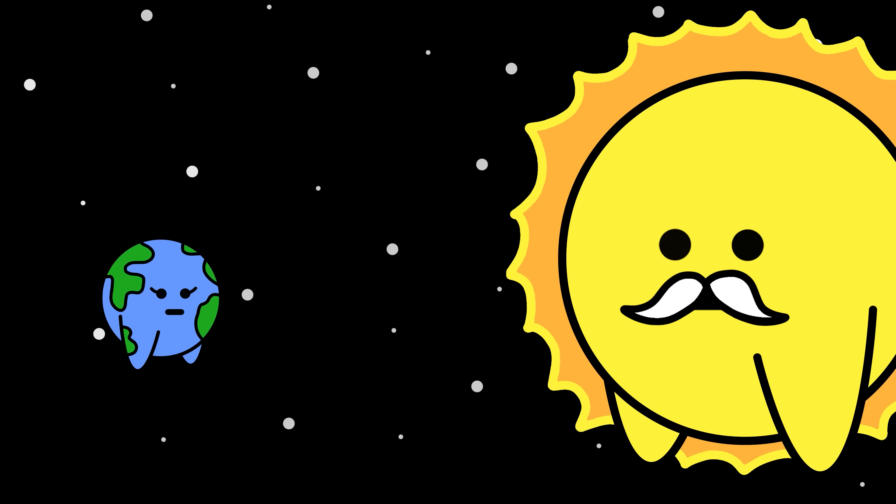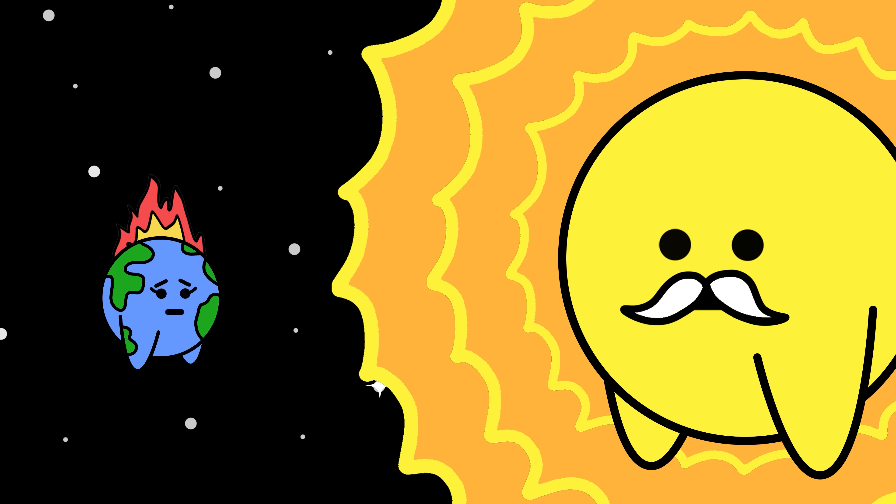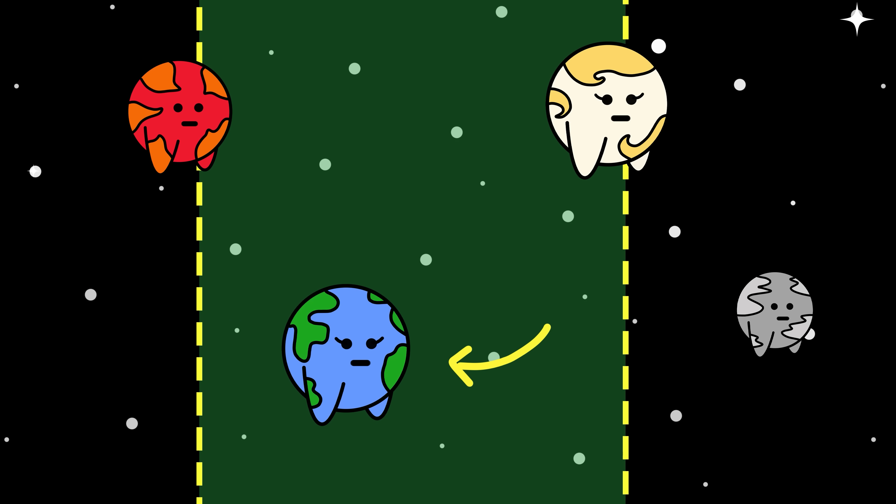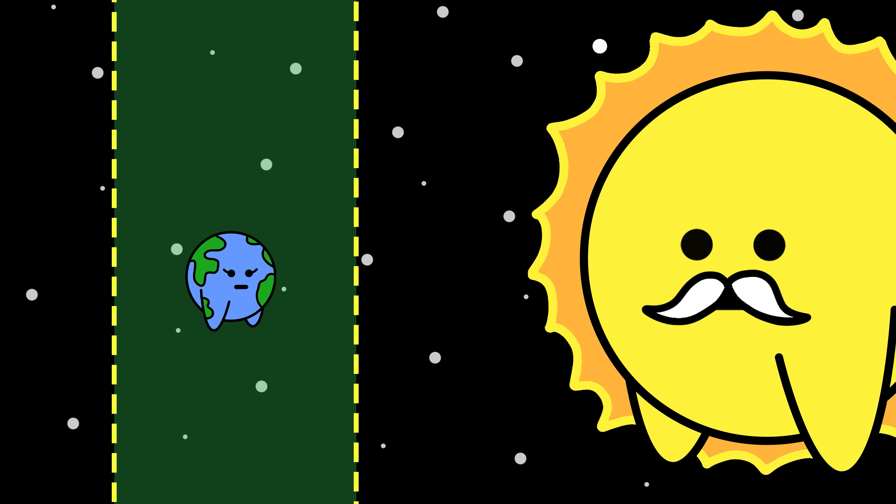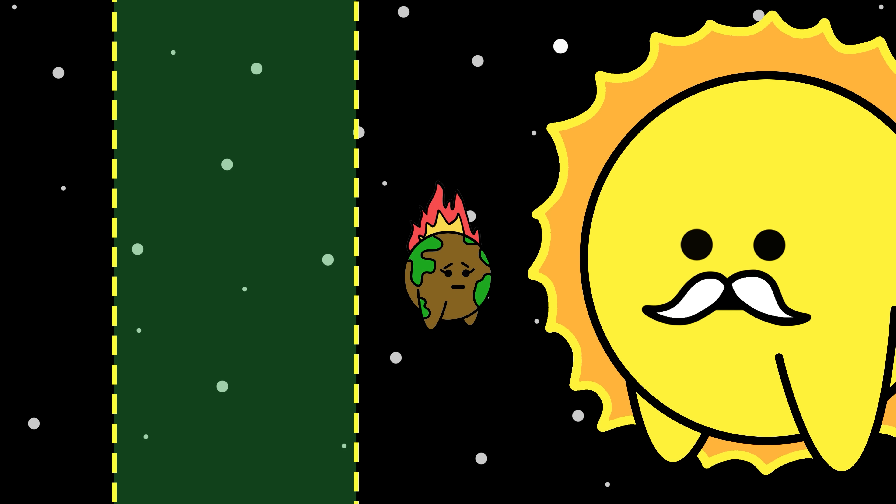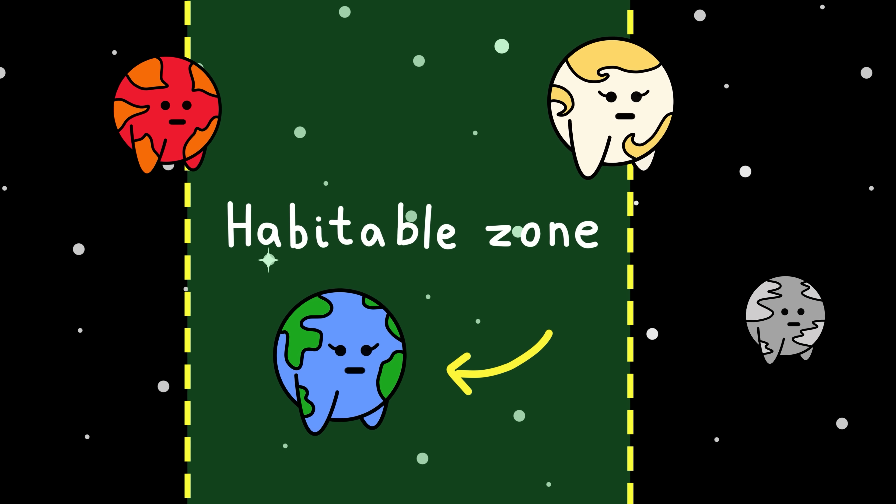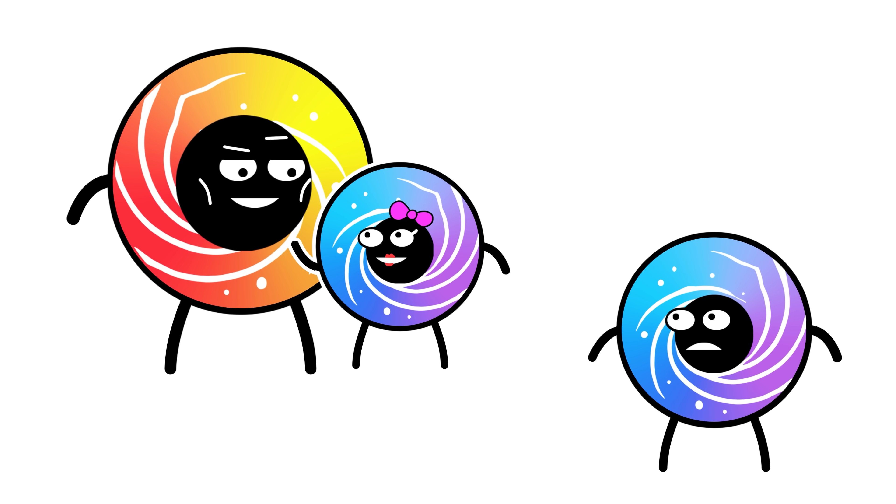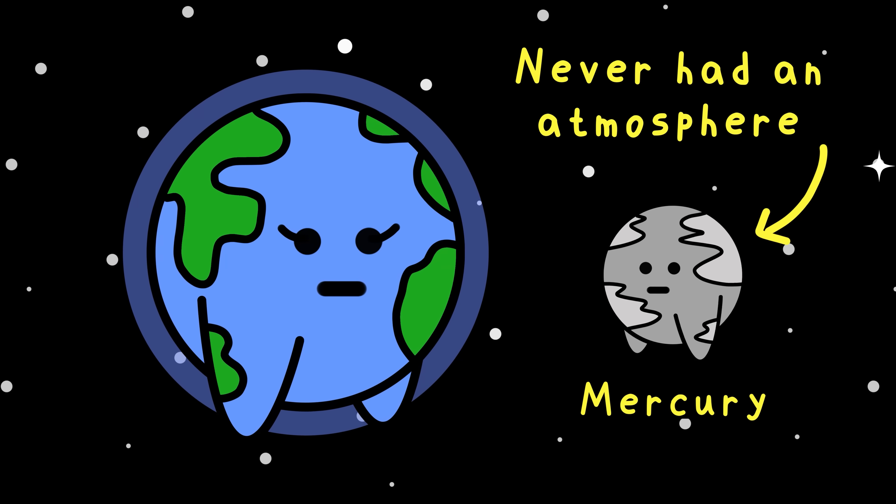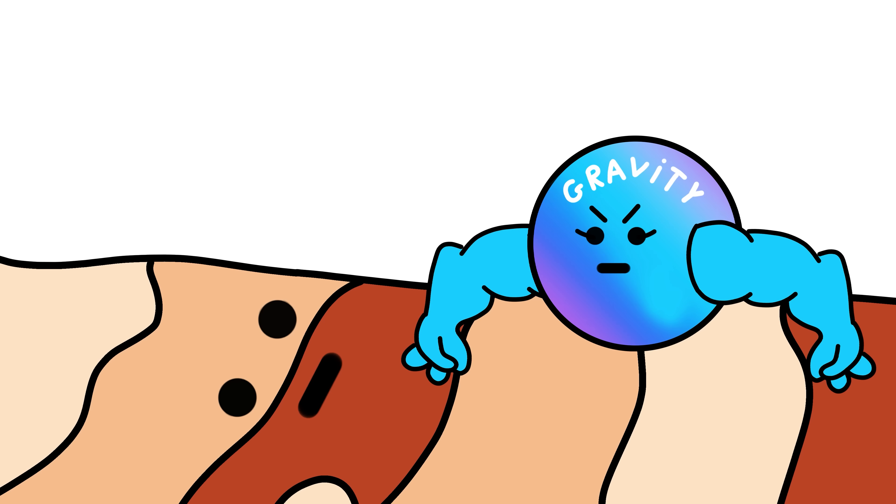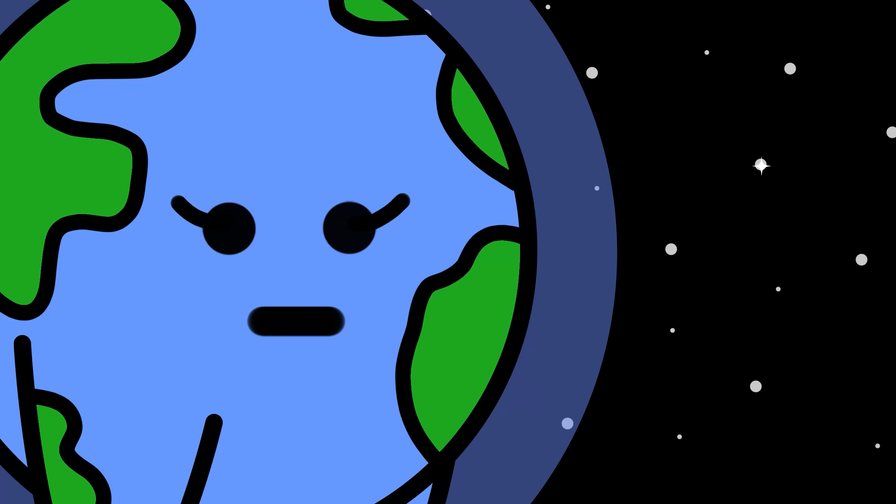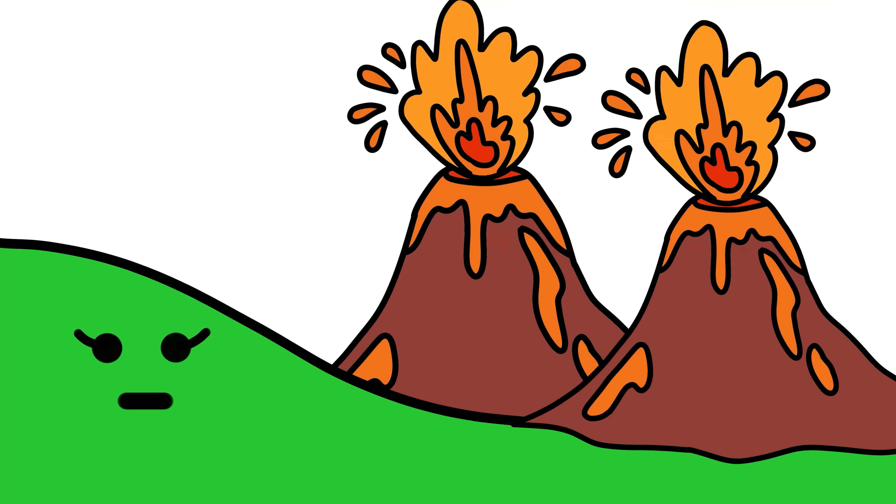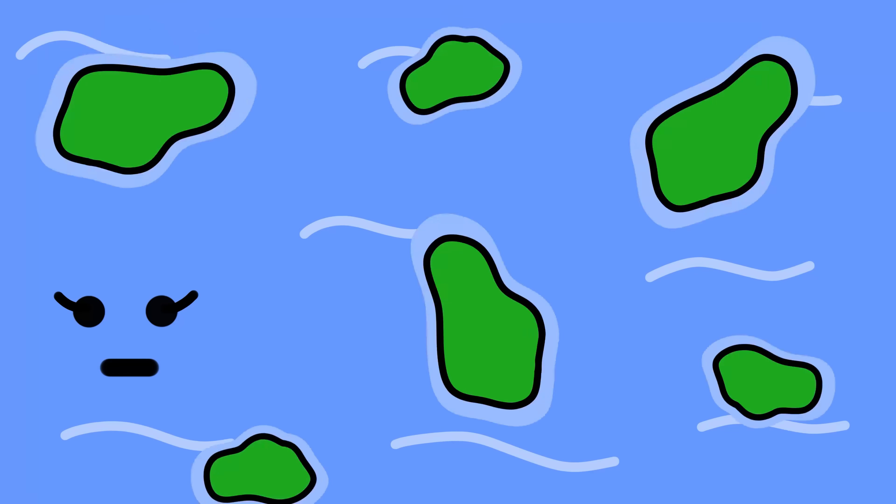Firstly, the star that the planet orbits around needs to live a long life, and not blast the planet with flares and die too fast for life to even evolve. Secondly, the planet has to sit in the right zone, close enough for liquid water to exist, but not so close that it boils away. This is called the habitable zone. Thirdly, as some of our viewers might have experienced in their dating life, size matters, because the planet has to be big enough to hold an atmosphere and to keep its core moving, but not so big that gravity crushes anything that lives on it.